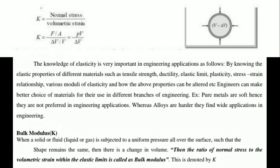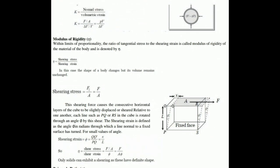Bulk modulus is the ratio of normal stress to the volumetric strain within the elastic limit. Here we concentrate on the volume of the material, unlike Young's modulus which focuses on length. Bulk modulus is denoted as capital K. K = (F/A) / (ΔV/V), where F/A is normal stress and ΔV/V is volumetric strain. Working through this equation gives K = PV / ΔV, where P is the pressure exerted on the volume.